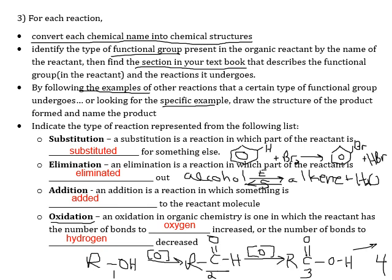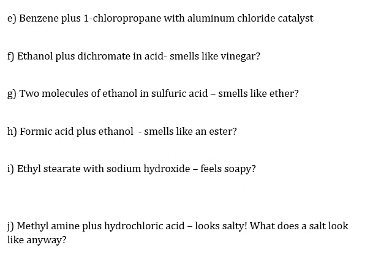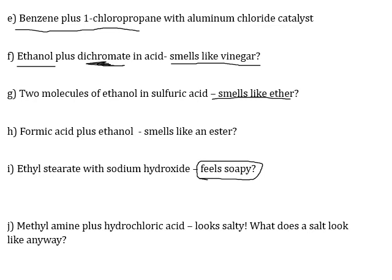For the murder sheet reaction examples: there's a benzene example — find where benzene reactions are discussed. There's an alcohol with chromate as oxidizing agent — hint, the product smells like vinegar, suggesting acetic acid is produced. Another reaction smells like ether, suggesting an ether product. Another feels soapy, suggesting a soap-like molecule is produced. And methyl amine is an amine — consider what happens when amines react with acids; the product looks salty, meaning it has a positive and negative portion.